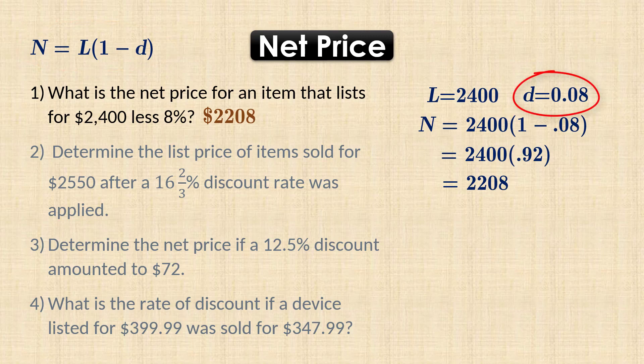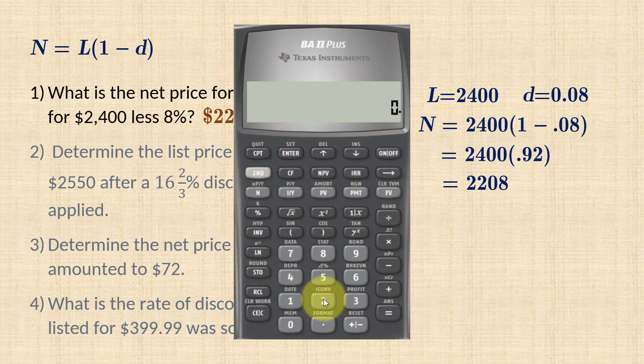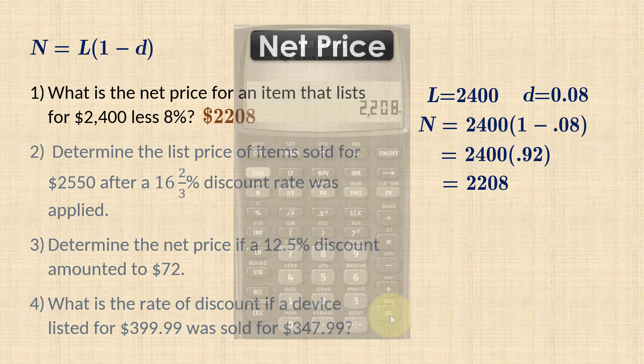So 8% discount here means that 92% of the list price is the net price. On most calculators like the BA2+, you can simply input 2400 minus 8% and then the equal sign to obtain 2208.